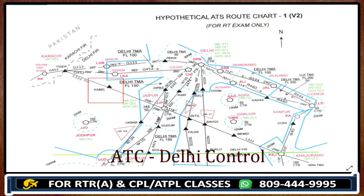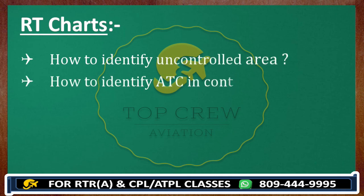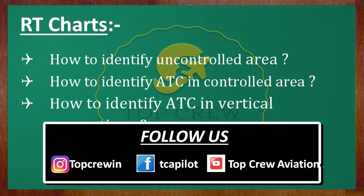So this is how you have to identify. You need to remember how to identify an uncontrolled area, how to identify ATC in a controlled area, and how to identify ATC in vertical separation. So now you have to be careful about all these things while finding ATC, because it is really important.